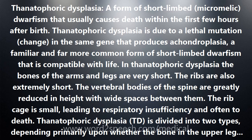Thanatophoric dysplasia is divided into two types, depending primarily upon whether the bone in the upper leg, the femur, is curved or straight. Babies with a curved short femur have type I thanatophoric dysplasia, TD1. This is the more common kind of TD.